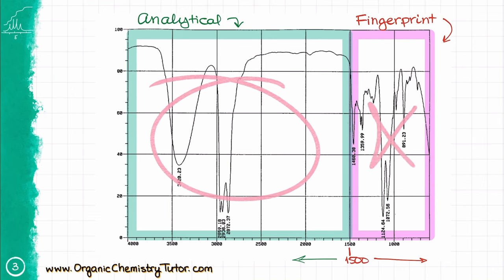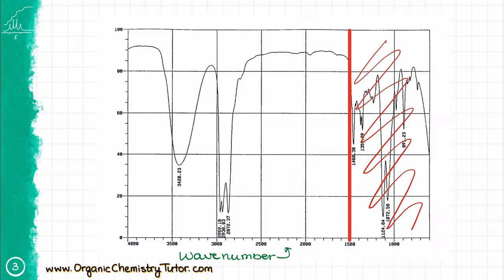So what type of information are we going to get from the analytical region? First of all, the wave number, which is these numbers over here. It's typically expressed in reciprocal centimeters, and it's related to the vibrational frequency, which is directly proportional to the energy with which our bonds are vibrating.